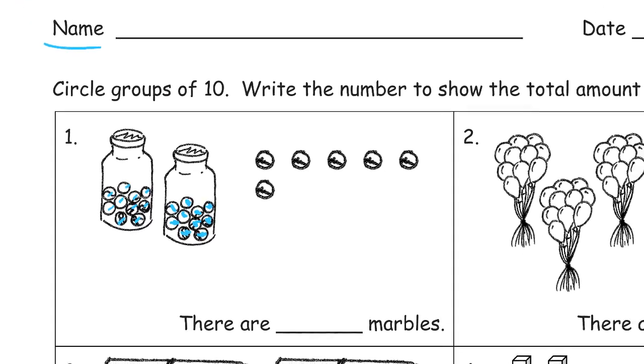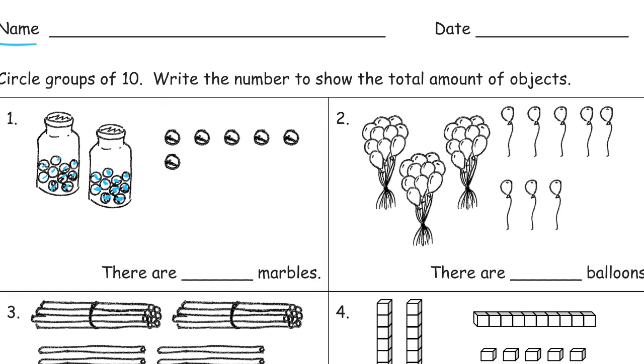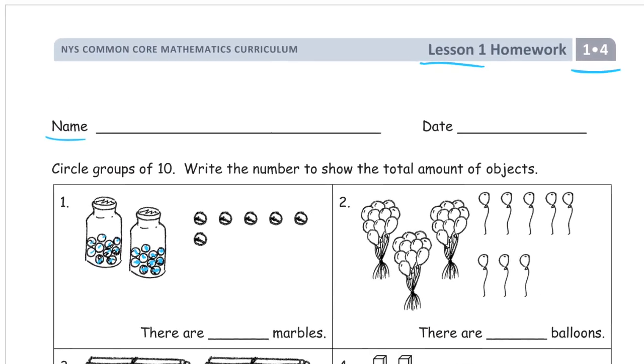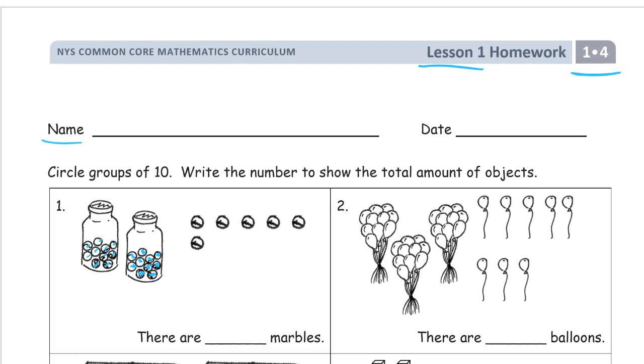There are some first graders who will want to count everything by starting from one and counting it one at a time and they'll want to count just each single marble, but the idea here is of course to just count by tens when you have groups of ten and count by ones when you have just ones.